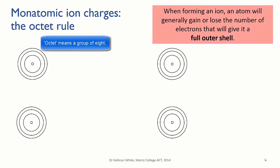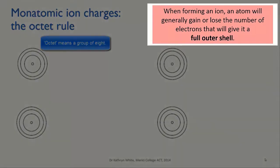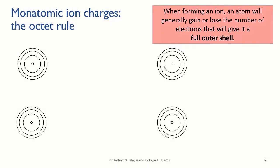We do this using a rule of thumb called the octet rule. This says that it's energetically favourable for an atom to lose or gain the number of electrons that will give it a full outer shell, so a full valence shell.